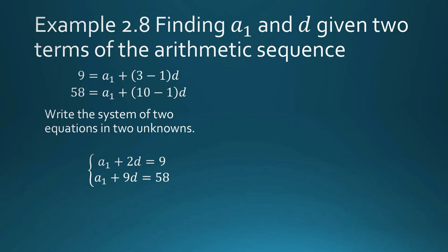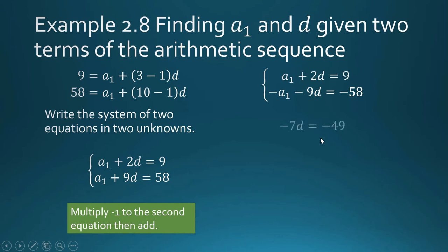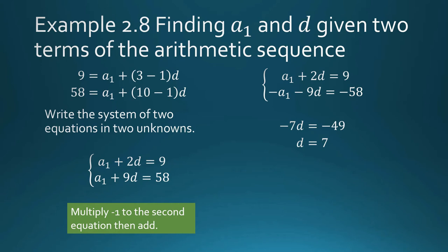The purpose of elimination is to remove one unknown. We multiply negative one to the second equation, then add the two equations. A sub 1 gets cancelled. 2d + (−9d) = −7d, and 9 + (−58) = −49, so −7d = −49. Dividing both sides by negative seven, d equals 7.